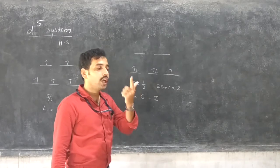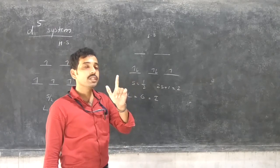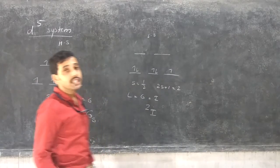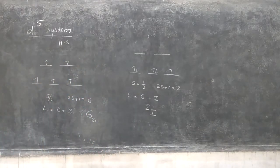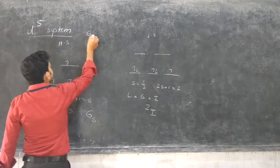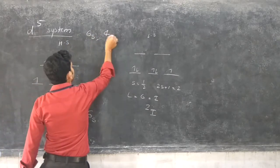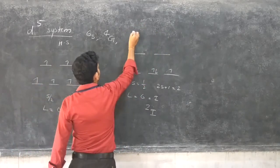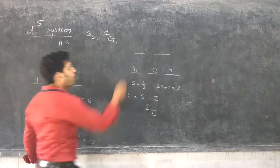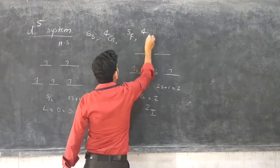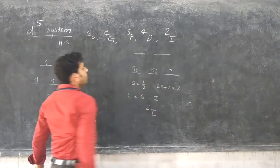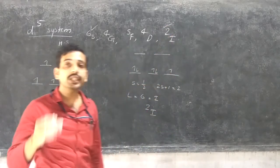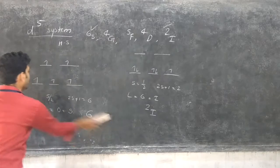Therefore, the spectroscopic notation is 2I. The other Russell-Saunders terms in the D5 system are: 6S as ground state energy, then 4G, 5F, 4D, and 2I. Out of these, we consider only 6S and 2I for the easiest way to draw the Tanabe-Sugano diagram of the D5 system.